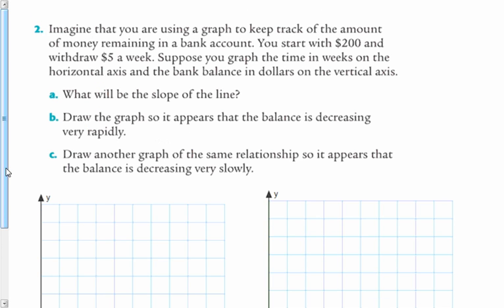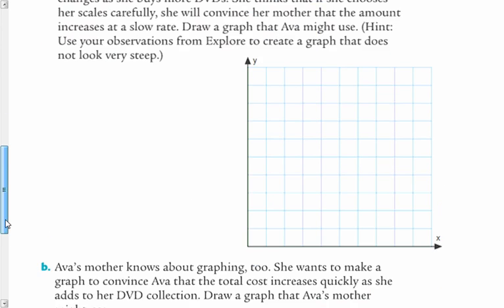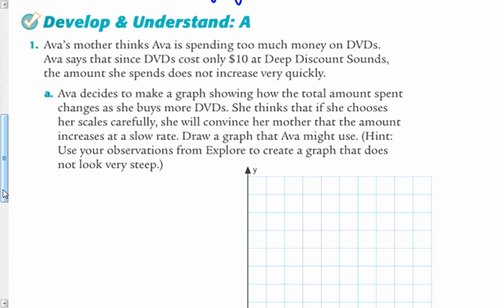Okay. So this is at the top for you. This will be at the top of page 9 in your packet. Ava's mother thinks Ava is spending too much money on DVDs. Ava says that since DVDs cost only $10 at Deep Discount Sounds, the amount she spends does not increase very rapidly. Ava decides to make a graph showing how the total amount spent changes as she buys more DVDs. She thinks that if she chooses her scales carefully, she will convince her mother that the amount increases at a slow rate. Draw a graph that Ava might use. So what we want is for this to look like it's not going up very fast.